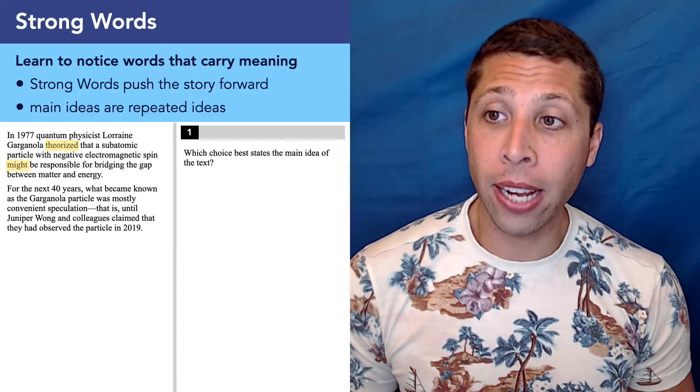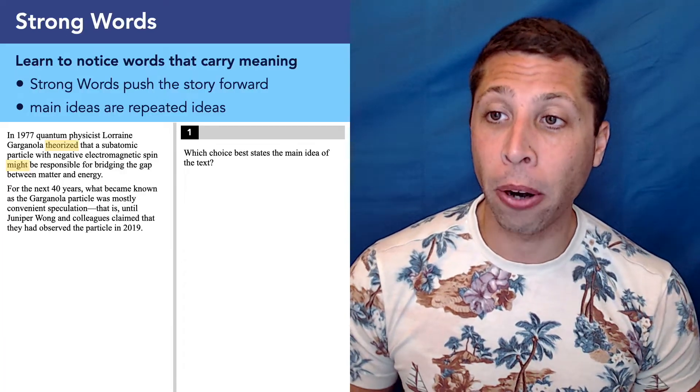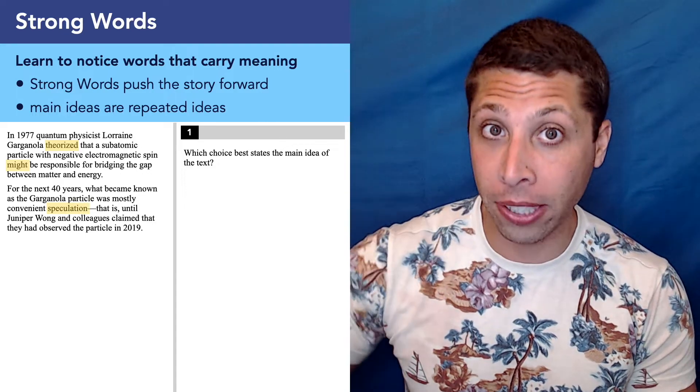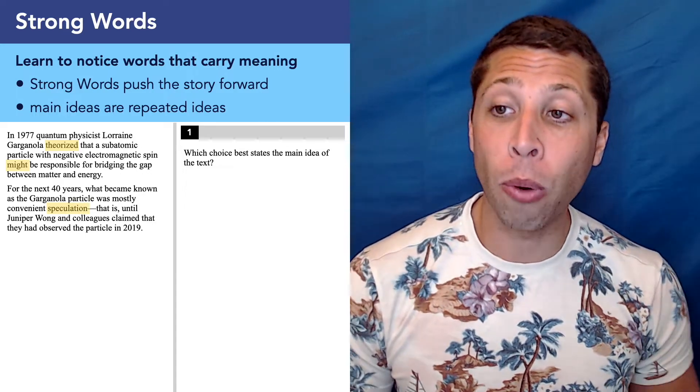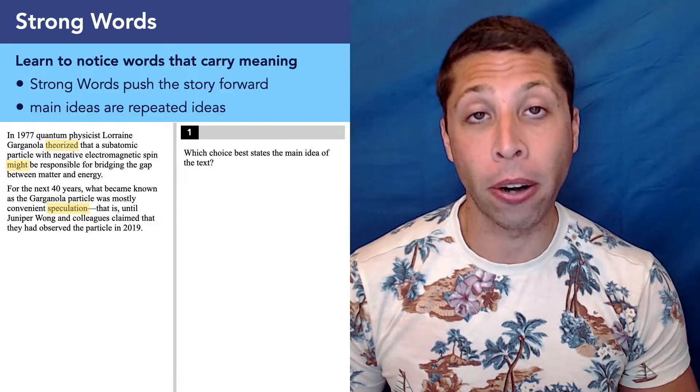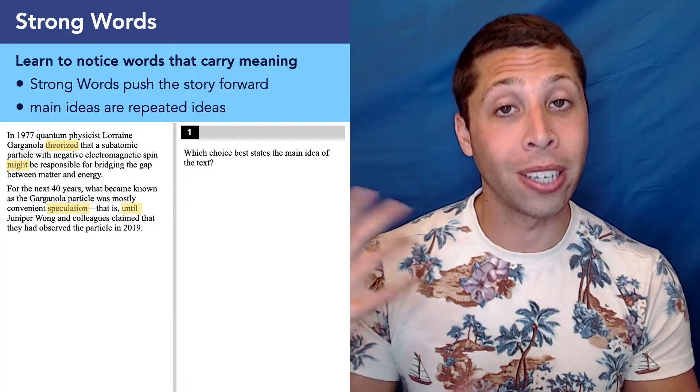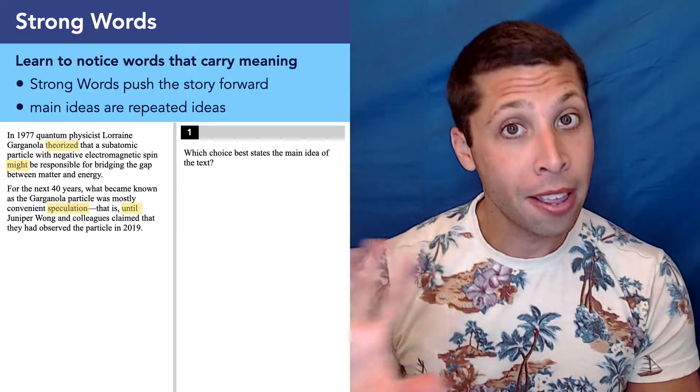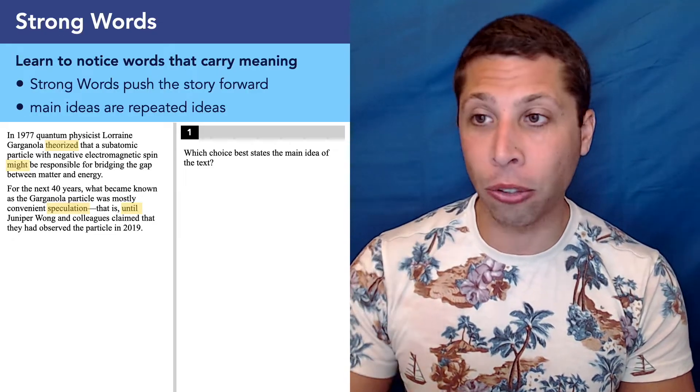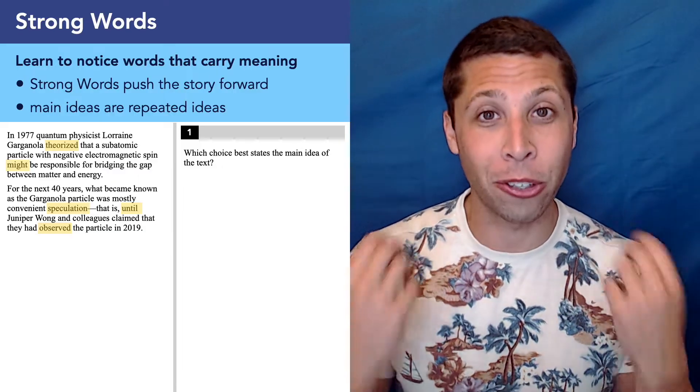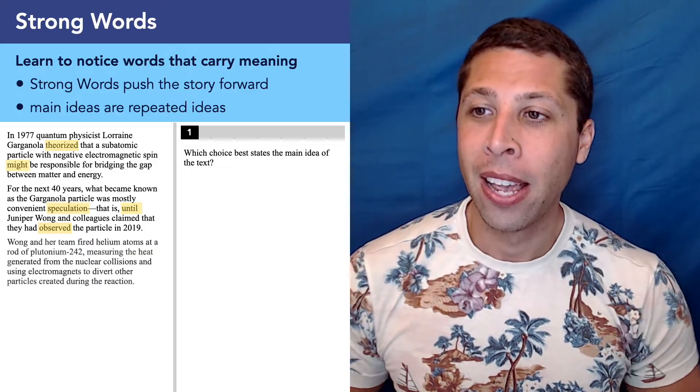In sentence two, for the next 40 years, what became known as the Garganola particle was mostly convenient speculation, more on the theory stuff. That is until Juniper Wang and colleagues claimed that they'd observed the particle in 2019. So we definitely have a strong word that's showing this contrast, the word until is moving the opinion of this particle in a different direction because now it's not just a theory, it has been observed. So we're starting to get the story here.